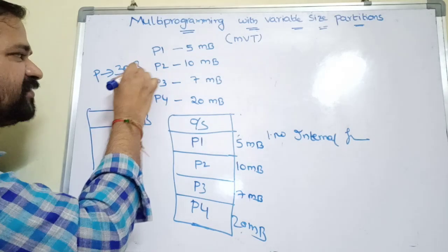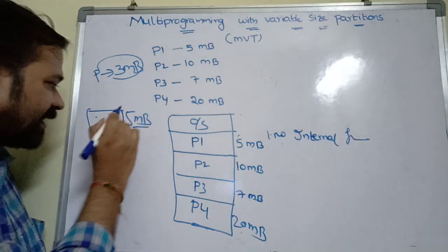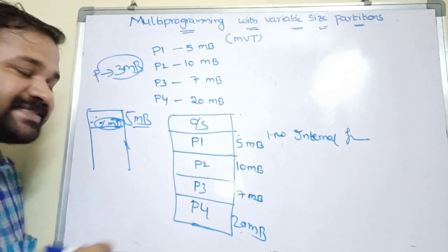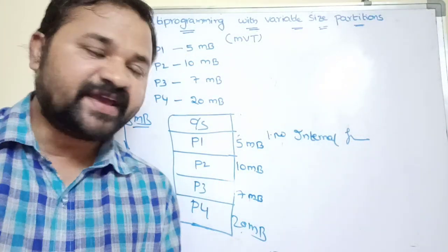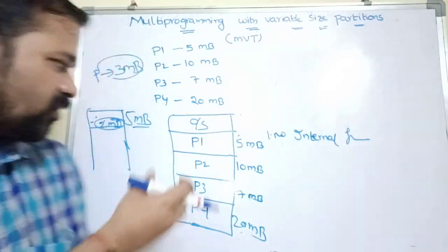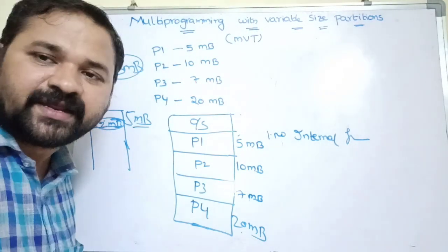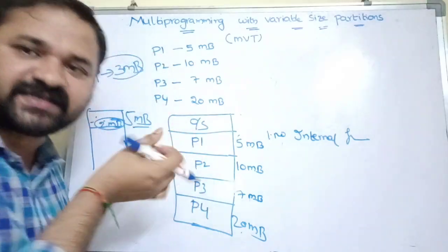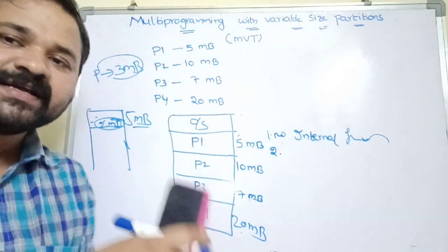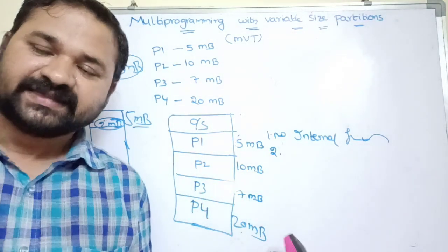If we store a 3 MB process in a 5 MB partition, 2 MB will be wasted — this wastage of space is known as internal fragmentation. In multiprogramming with variable size partitions, there is no internal fragmentation because we allocate memory based on the process's request, so no wasted space arises within a partition.